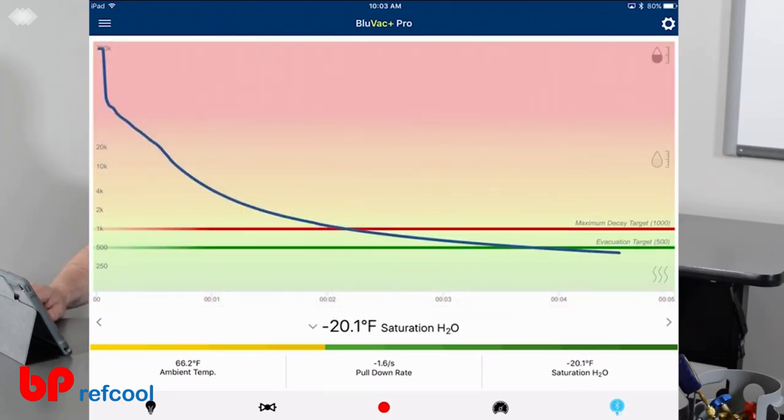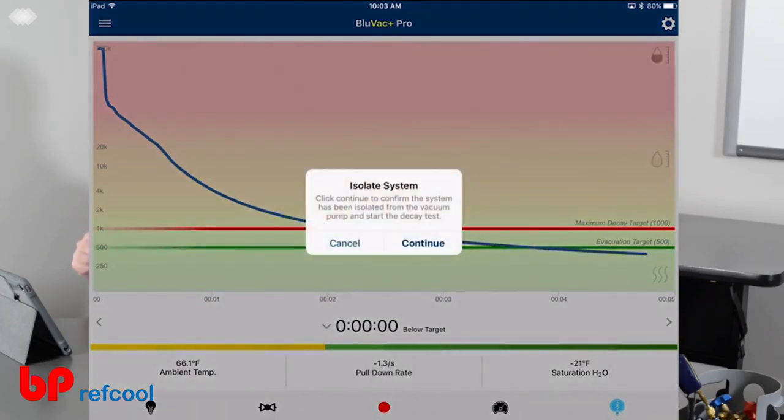Go ahead and reset the zoom. We'll go back here real quick. You can see in about nine seconds, it's going to prompt us to isolate the gauges from the system or isolate the core tools.